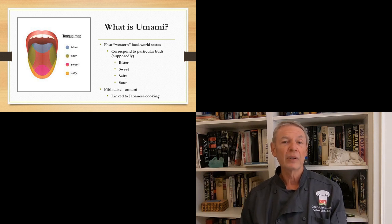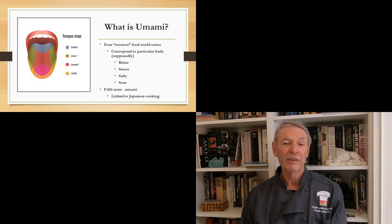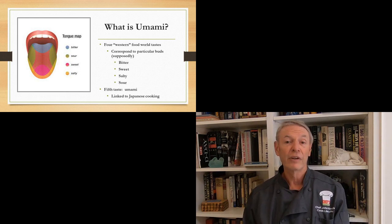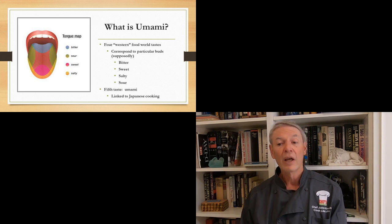And until recently, these were believed to correspond to particular taste buds on the tongue. Now, scientists are saying maybe these basic tastes don't correspond to particular taste buds. But it doesn't really matter. We have four basic tastes in Western cooking: sweet, sour, salty, and bitter.